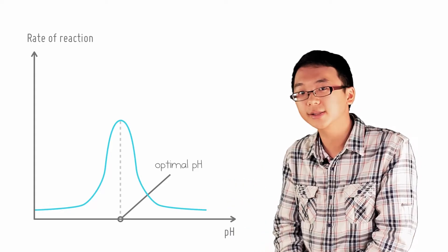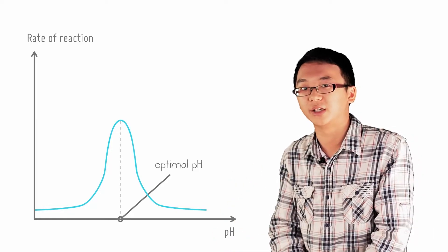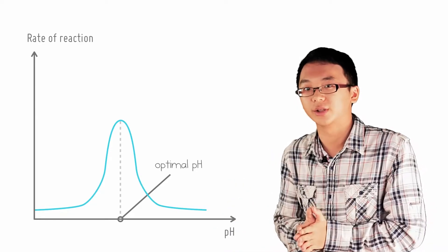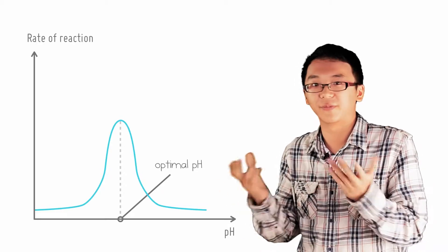As the pH of the environment moves towards the optimal pH of the enzyme, the rate of the reaction increases. That seems obvious.